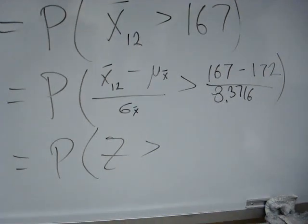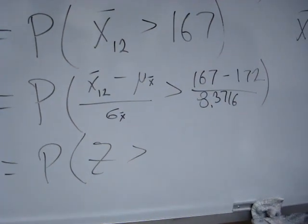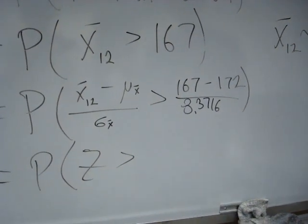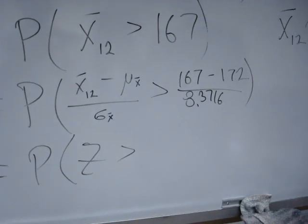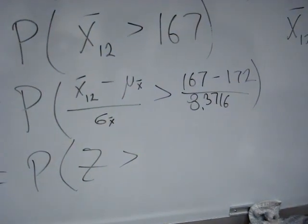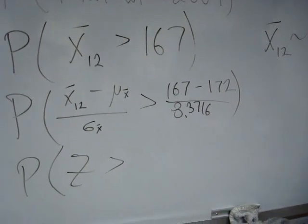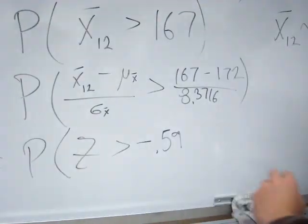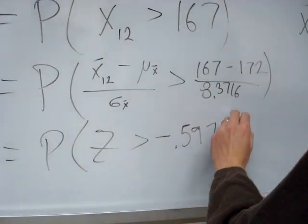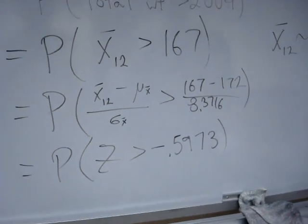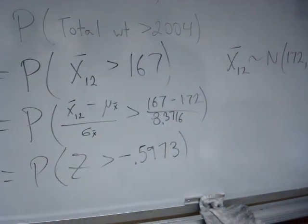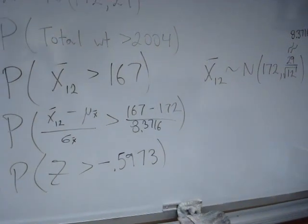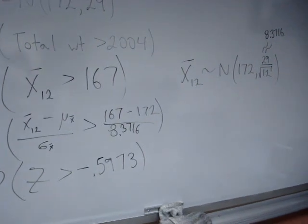And here I'll find the z-score. I'll take 167 minus 172 and divide that by 8.3716. So it's negative 0.5973. So if you wanted to look this up in your table, it would be all the area to the right of negative 0.6.